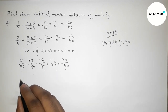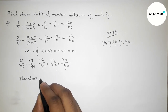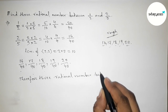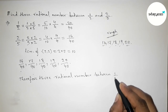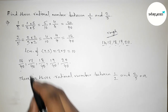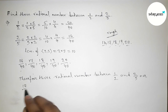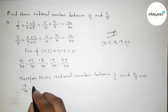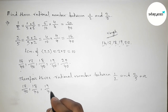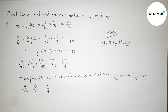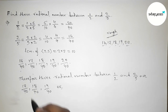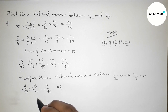Therefore the 3 required rational numbers between 1/2 and 2/5 are: 17/40, 18/40, and 19/40. We can also simplify 18/40 by dividing both numbers by 2, which gives 9/20. So the three rational numbers are 17/40, 9/20, and 19/40.